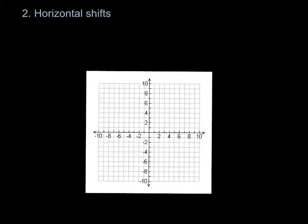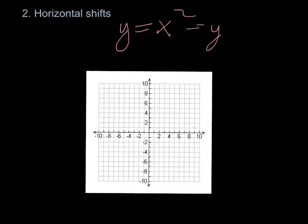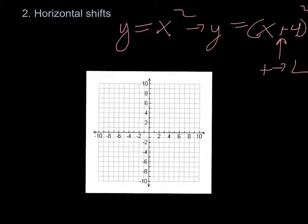Horizontal shifts are a bit more confusing because the signs are opposite. If you have y equals x squared and want to shift it 4 units to the left, you write y equals (x+4) squared. The tricky part is the plus sign — plus goes left, negative goes right. Vertical shifts match the sign; horizontal shifts are opposite.